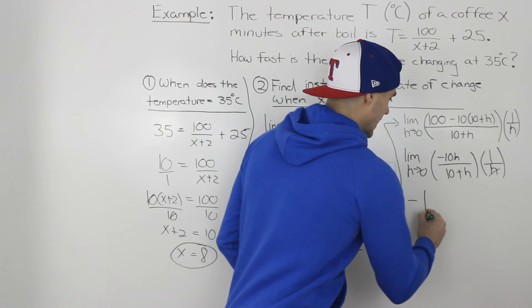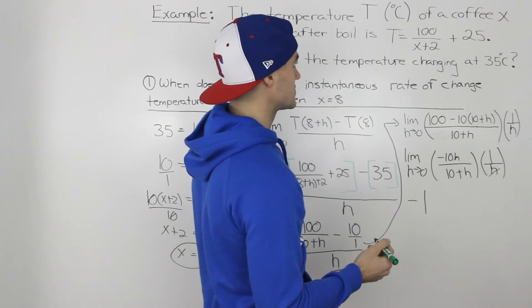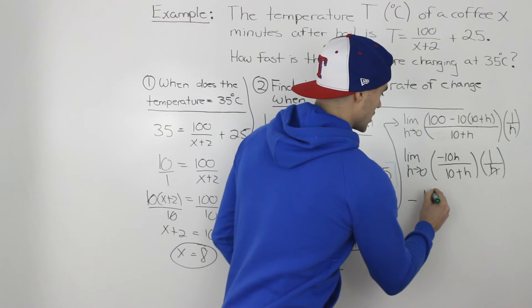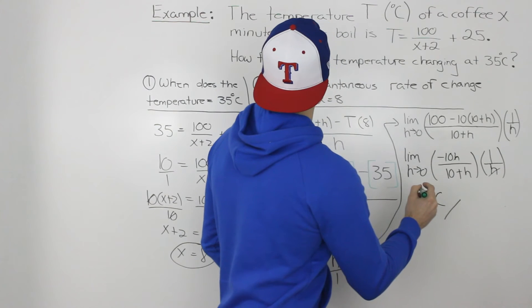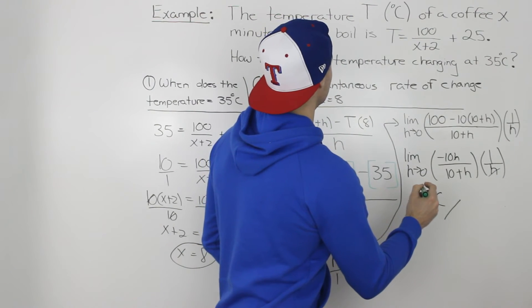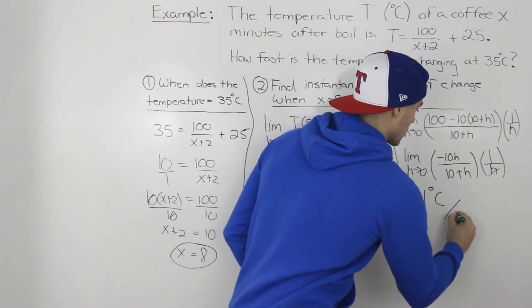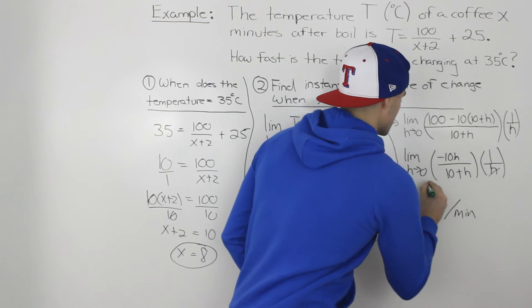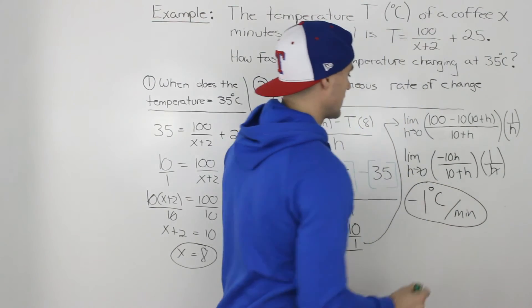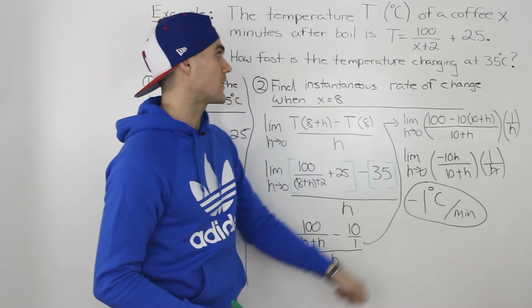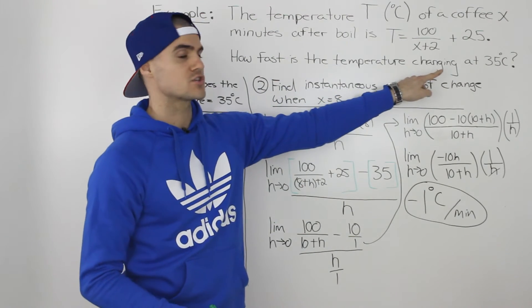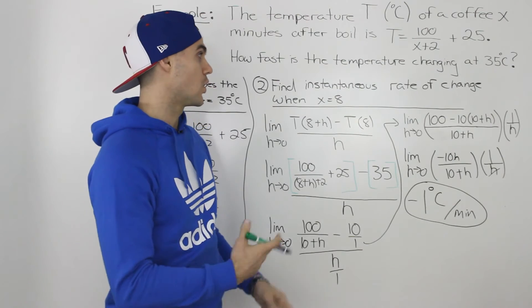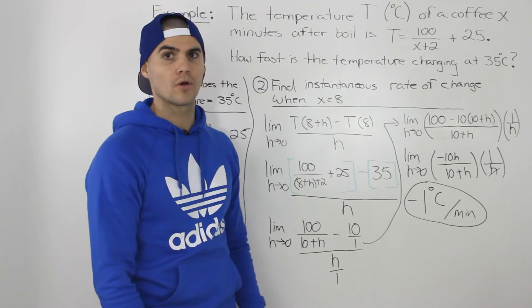So the answer is negative 1. So the temperature is changing at negative 1 degrees Celsius per the independent variable is in minutes, so it's per minute. So that is our answer. Negative 1 degrees Celsius per minute. That's how fast the temperature is changing when the coffee reaches 35 degrees Celsius or 8 minutes after the boil.